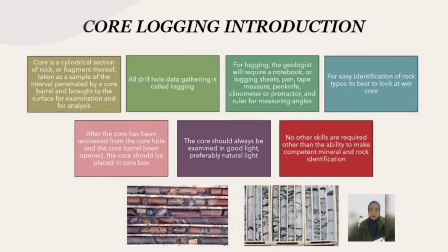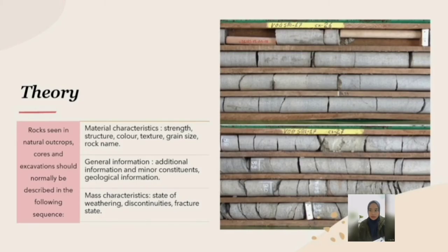The theory of core logging: rocks seen in natural outcrops, cores, and excavations should normally be described in the following sequence. First, material characteristics — which includes strength, structure, color, texture, grain size, and rock name. Second is general information, which includes additional information and minor constituents.